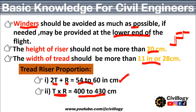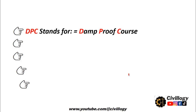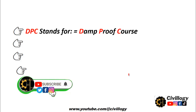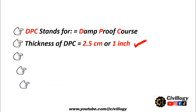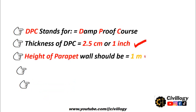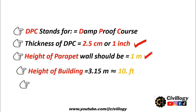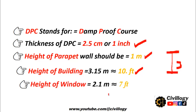The next point is DPC - DPC stands for Damp Proof Course, and the thickness of DPC should be equal to 2.5 centimeters or 1 inch. The height of the parapet wall should be 1 meter because it increases load and does not have any other purpose, so it should be limited to 1 meter. The height of the building - from roof to floor - should be approximately 3.15 meters. The top level of the window should be up to 7 feet.